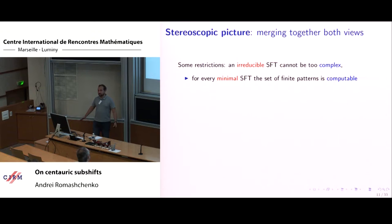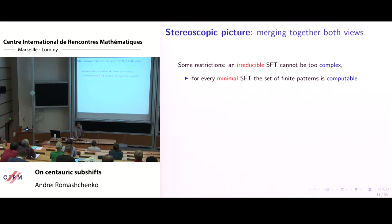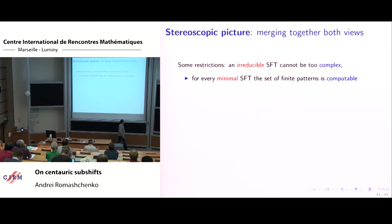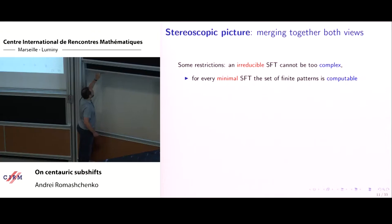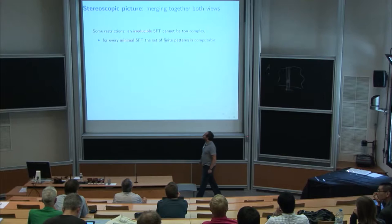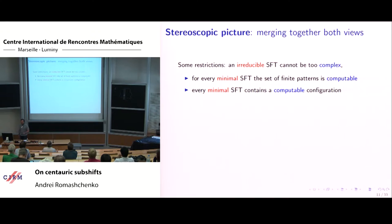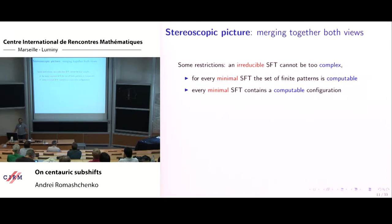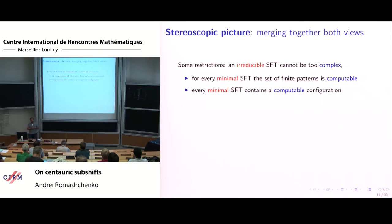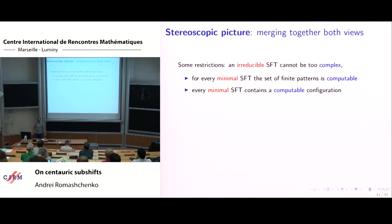Let us take a tiling or SFT which is minimal — that is, all configurations have exactly the same finite patterns. I claim there exists at least one infinite computable configuration. For minimal SFT we have two properties: first, the set of finite patterns is computable; and second, there exists at least one computable point. The second follows from the first: take some pattern of size 1×1 which can appear in an infinite configuration — we can find it algorithmically — then extend it, again and again, and so we get an infinite correct pattern.